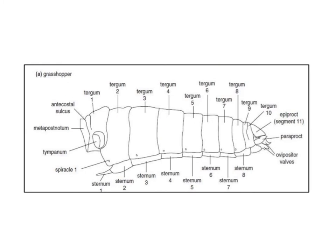The different abdominal segments from 1 to 11 can be seen, including the first tergum, first sternum, second tergum, second sternum, and continuing through the third, fourth, fifth, sixth, seventh, eighth and ninth segments. We can also see the sternum, epiproct at the 11th segment, paraproct, and the ovipositor.